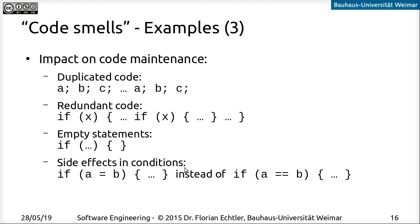A very nasty code smell is side effects in conditions. This isn't possible in Java, but it is in C and C++. Sometimes people use it intentionally: code that first assigns the value of B to A and then evaluates the new value of A, whether it's zero or not. But in many cases this is unintentional — if you intended to just compare A and B and forgot one equal sign, it will still be valid code. Almost all recent C compilers will flag that as a warning because it's an easy accidental bug that causes quite a lot of headache to track down.